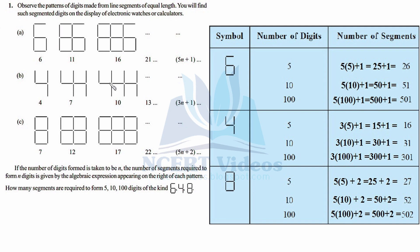Now moving to the answer. First we will make a table with three columns. In the first column we write the symbol, in the second the number of digits, and in the third the number of segments we have to find. The symbols are 6, 4, and 8, and the number of digits is 5, 10, and 100 for each — because we have to find the number of segments for each digit repeated 5 times, 10 times, and 100 times.